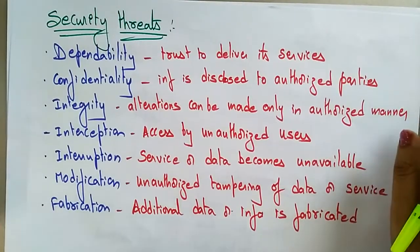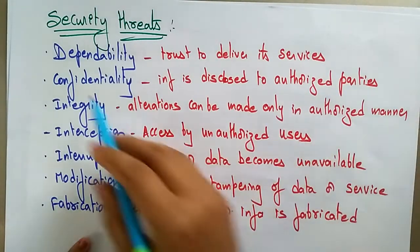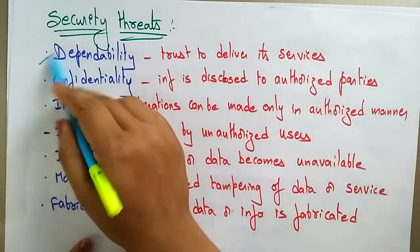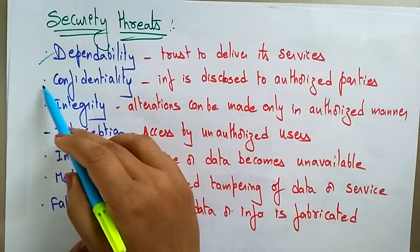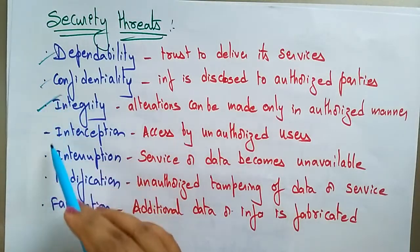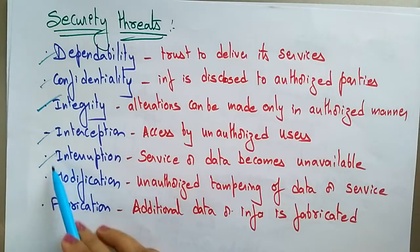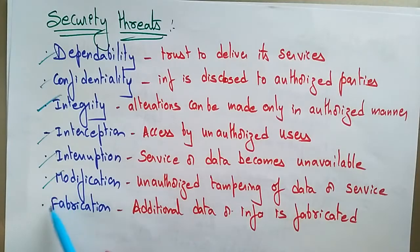What are the security threats that occur in distributed systems? They may be: dependability, confidentiality, integrity, interception, interruption, modification, and fabrication.